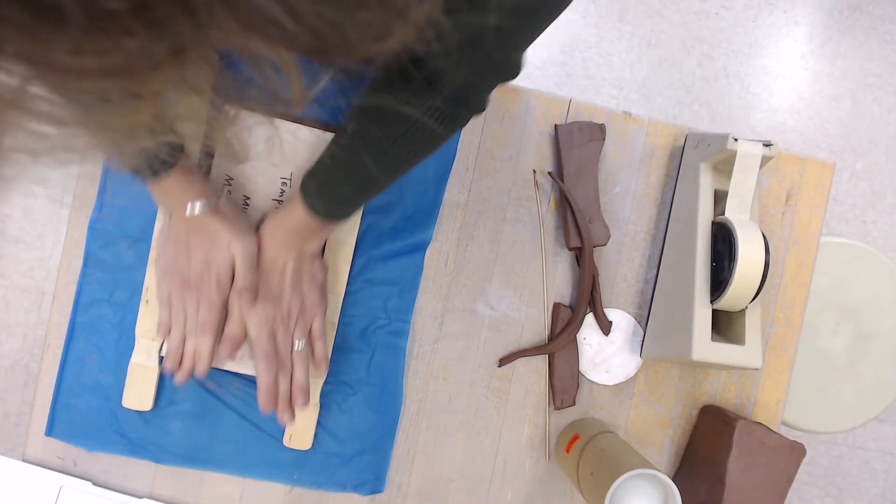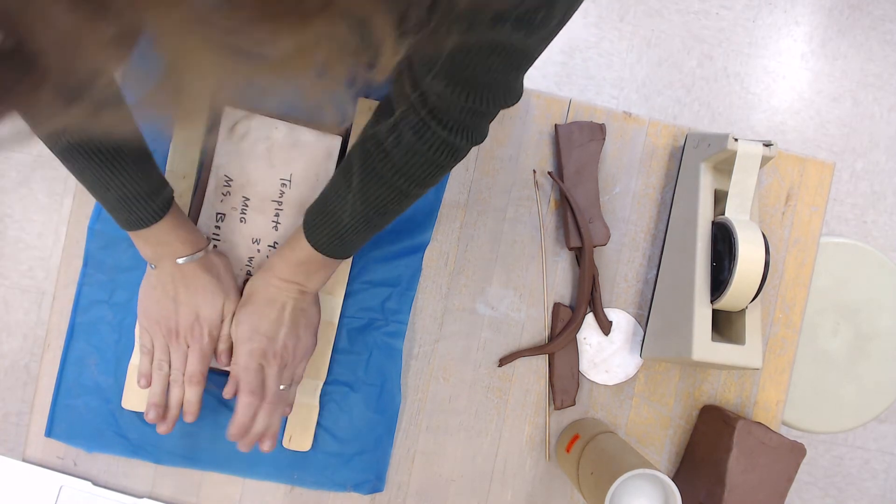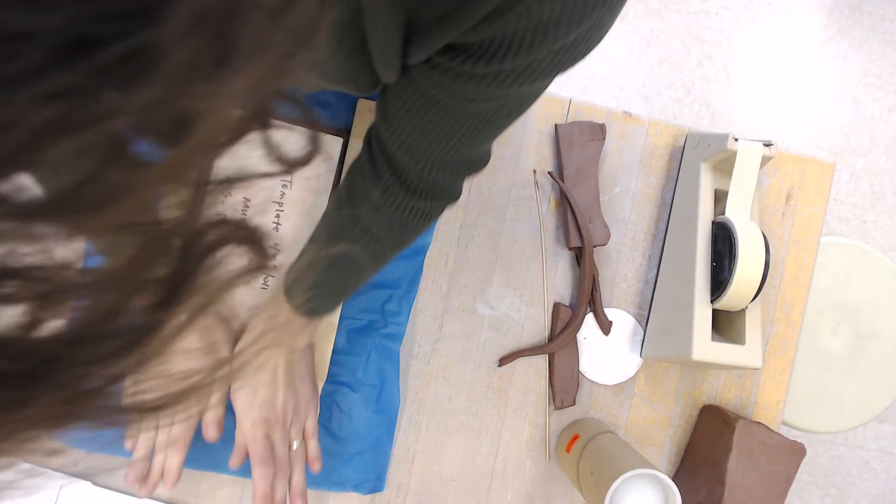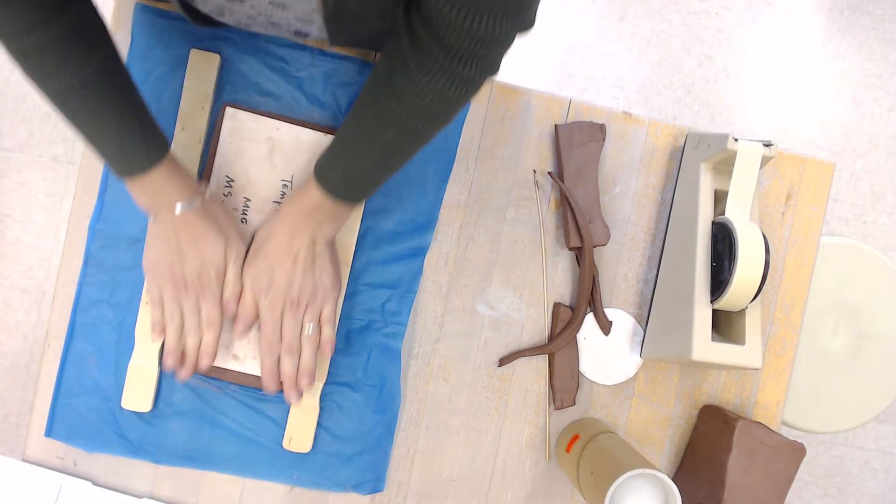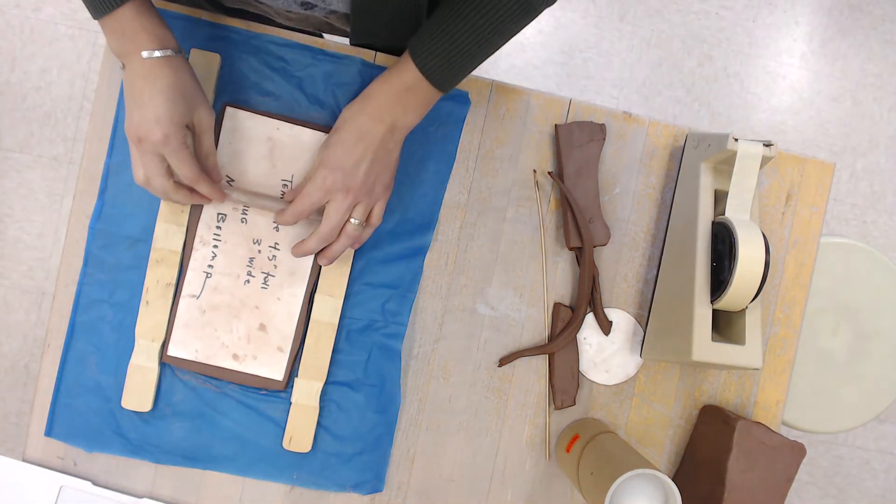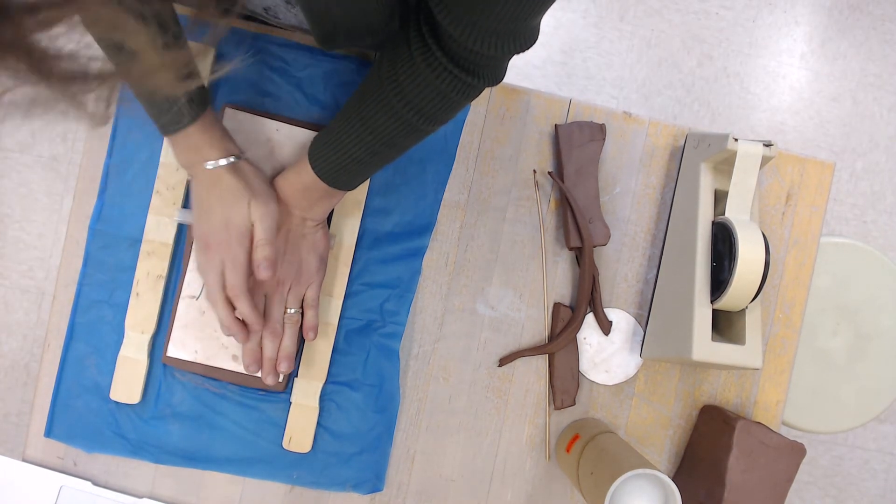You want it nice and even. I am standing while I do this as well. You can get a lot more pressure when you're standing versus if you are sitting down. So I recommend that you stand and you try to apply nice even pressure on your rolling pin. And identify any areas that it feels like it's a little bit thicker than other spots.